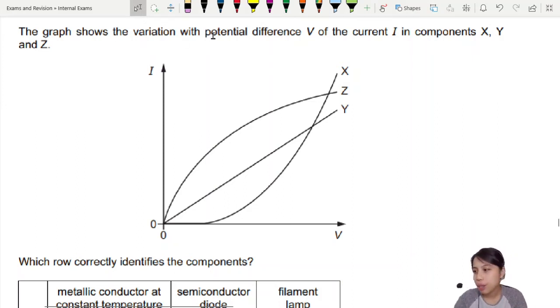The graph shows the variation with potential difference of the current in three different types of components and their graphs look like this. These are what we call IV curves.